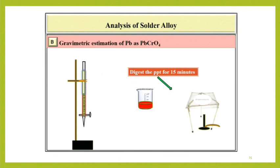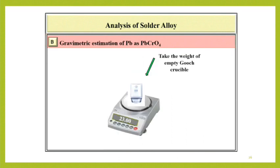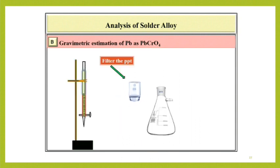Digest the precipitate for about 15 minutes in a water bath. Meanwhile, take the weight of empty gooch crucible and record it in observation table. Filter the precipitate of PbCrO4 through this previously weighed gooch crucible and then wash it with 5 ml distilled water. Give 4 such washings.